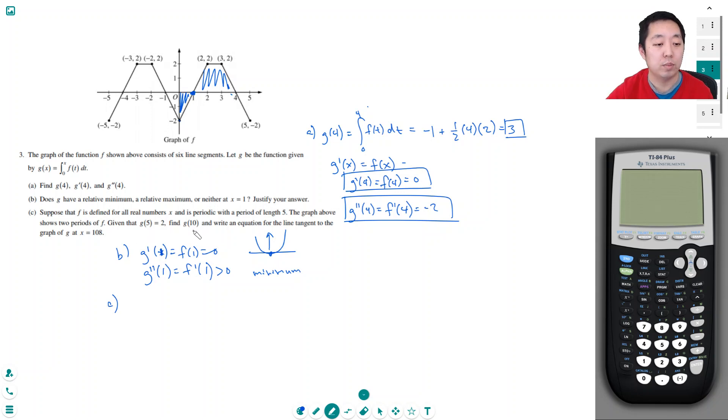Given that g of 5 equals 2, find g of 10. So g of 5 is equal to 2. g of 10 is the integral from 0 to 10 of f(t) dt. I wanted to go the area from 0 all the way out to 10 which would be a second one up here because it has a period of 5. They tell you that g of 5 is equal to 2, so this area for the first period is 2. When I do two areas it's going to be double that, which is going to be 4.